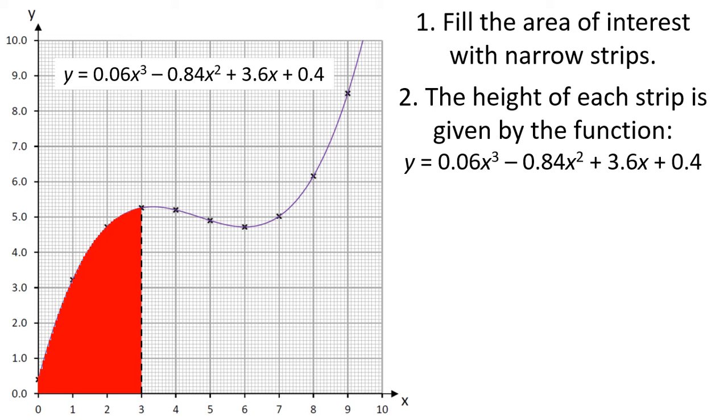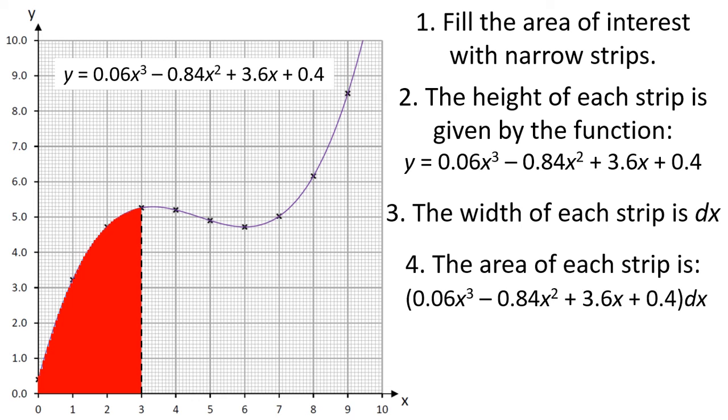The height of each strip is given by the function, the width of each strip is going to be called dx. And if we make the width of each strip really, really narrow, maybe infinitely narrow, and add up all of those strips, we'll get the total area.